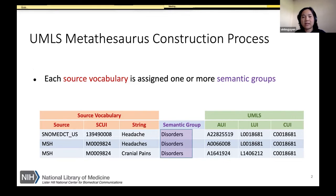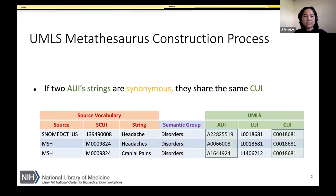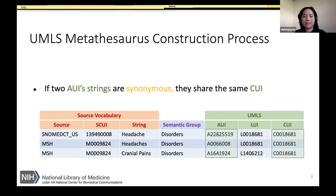If two atom strings are synonymous, they will be assigned to the same CUI — concept unique identifier. For example, "headaches" and "headaches and cranial pains" are synonymous and are assigned to the same CUI.